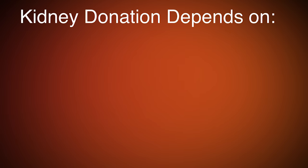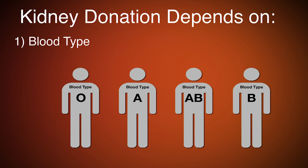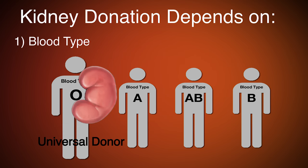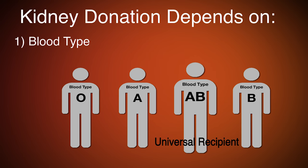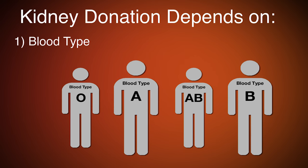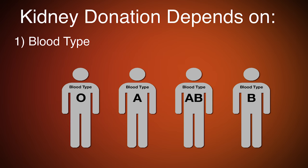There are two important things to determine compatibility from a donor to a recipient. The most important is blood type. Generally speaking, if you're blood type O, you can donate to anybody. If you're blood type AB, you can receive a kidney from anybody. If you're other types like A or B, there are some different issues, but essentially blood type is the most important thing. If your blood type doesn't match, you're going to reject the kidney right away.